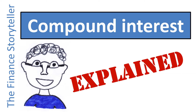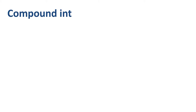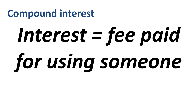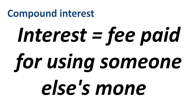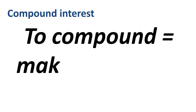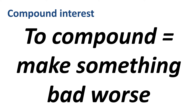Compound Interest Explained. Let's look at the meaning of the term compound interest first, and follow it up with numerical examples. Interest is a fee paid for the use of someone else's money. The verb to compound in a legal context means make something bad worse — that's what we'll review in this video.